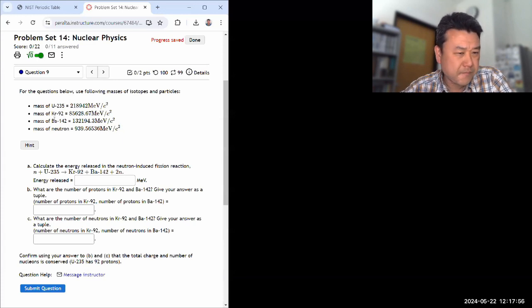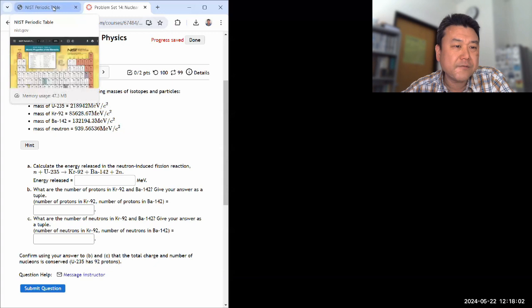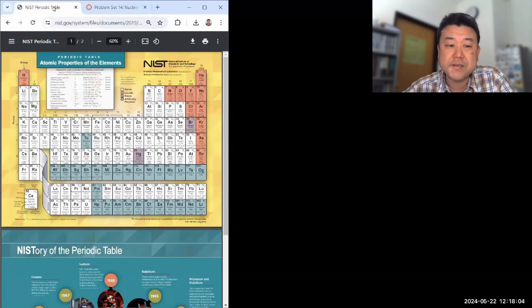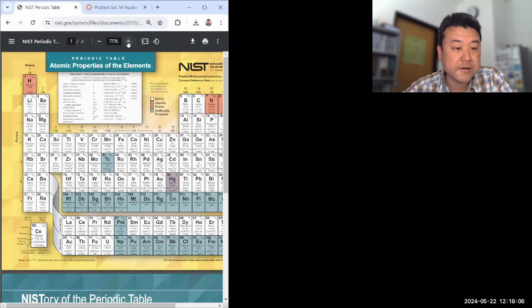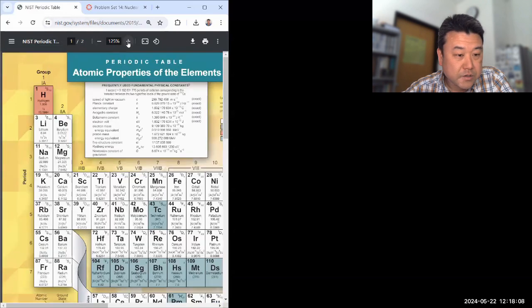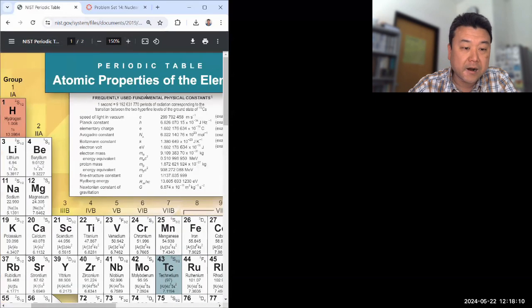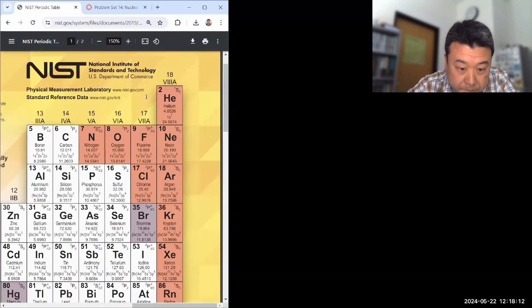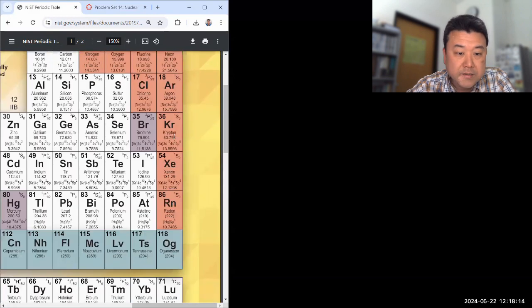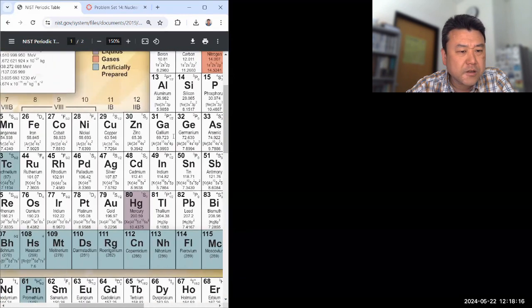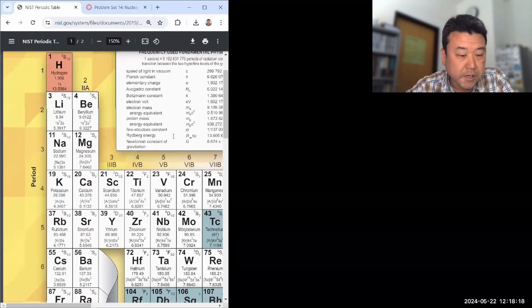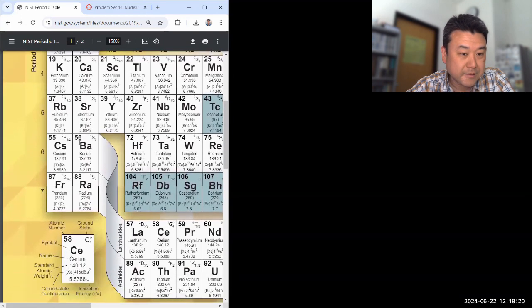So let me make sure that I have this right, krypton and barium. I have this periodic table here, I'm going to need it as a reference for this entire set. So let me make sure I got the name for Kr correct. I think that's krypton, yeah, one of the noble gases. And Ba, I thought there was a barium, but let's double check. Yeah, okay, that's barium, good.